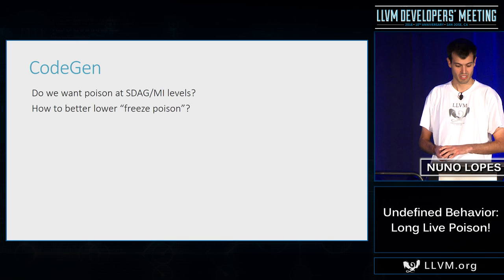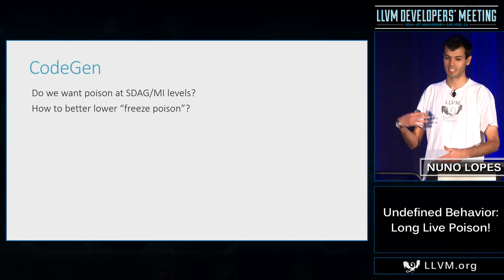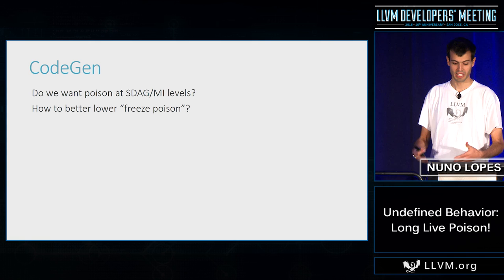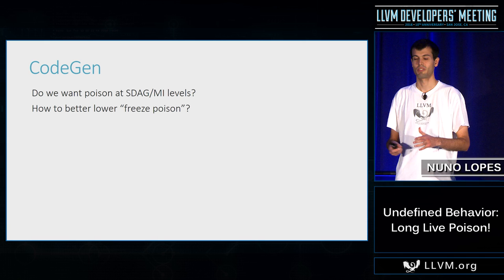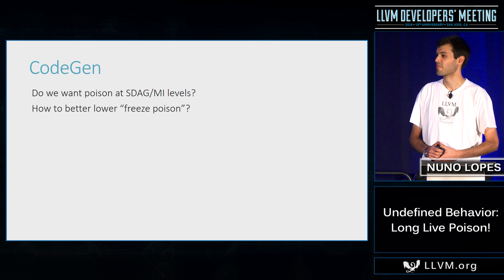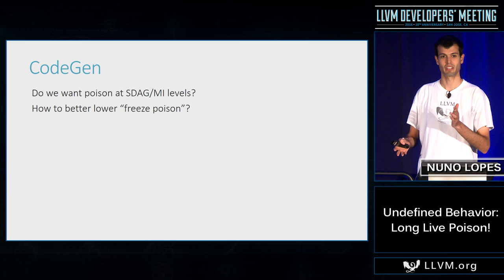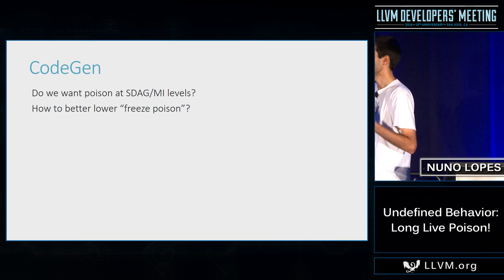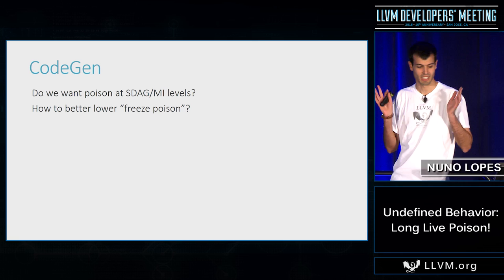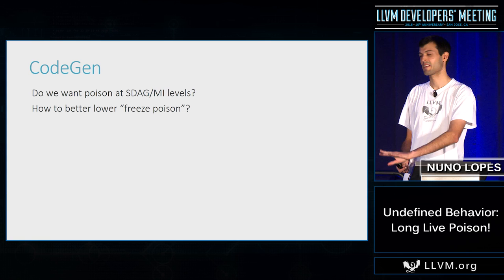Regarding CodeGen, I have more questions than answers — I'm not an expert in CodeGen. There's discussion about whether we want poison at SelectionDAG and machine instruction level and what the implications are, and how to best lower freeze of poison — whether you just replace it with zero, or use the trick Reid mentioned of reusing a base or stack pointer register since those are usually constant throughout the function. Our current implementation uses a very naive lowering — we can do much better.